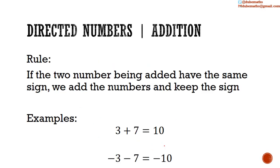Now to the actual addition. If we have two positive numbers or two negative numbers, we add the numbers and keep the sign. Here we have positive 3 added to positive 7 — the two signs are the same, so we add 3 to 7 to get 10, and we keep the sign. Both signs are positive, so we get positive 10. Similarly, we have negative 3 being added to negative 7 — both signs are the same, so we add: 3 plus 7 equals 10, and we keep the sign: negative 10.